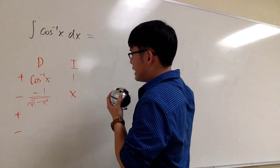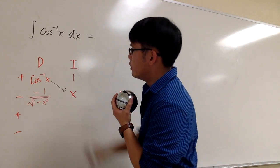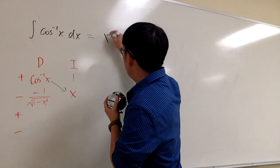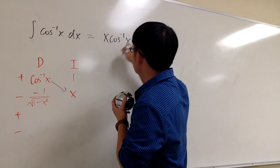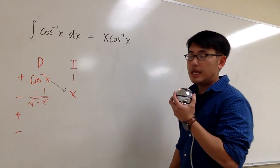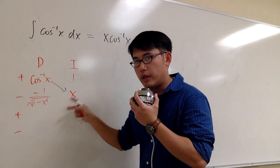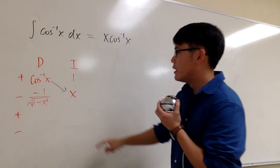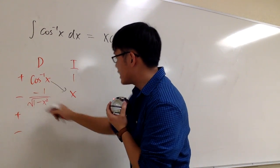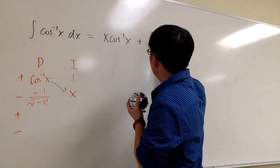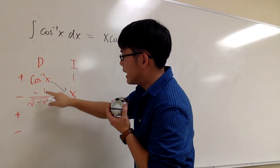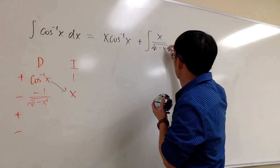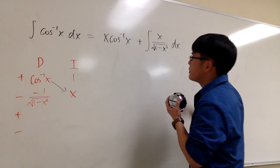To work this out, remember the diagonal — that's going to be the answer. So we have x times inverse cosine x, and there's no more integral on that. The product of each row, including the sign, gives an integral. Notice this is negative times a negative.